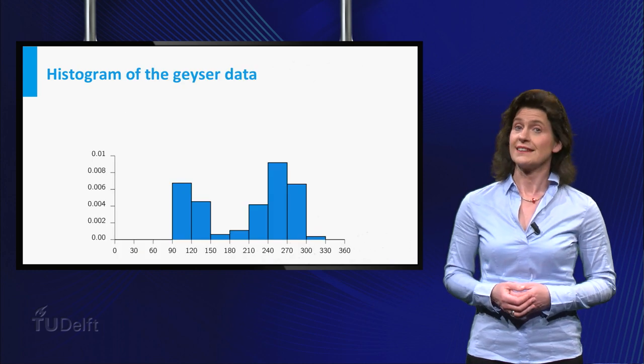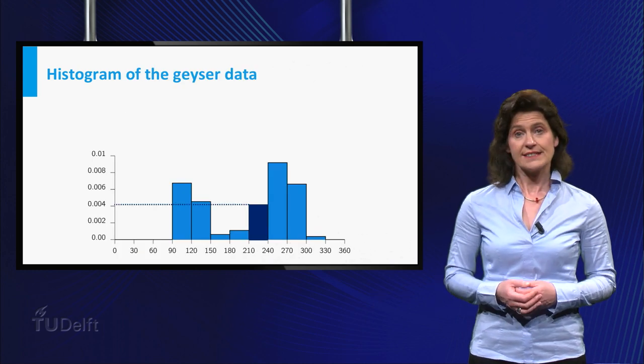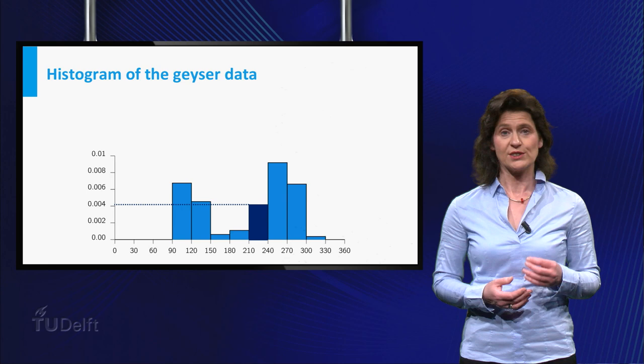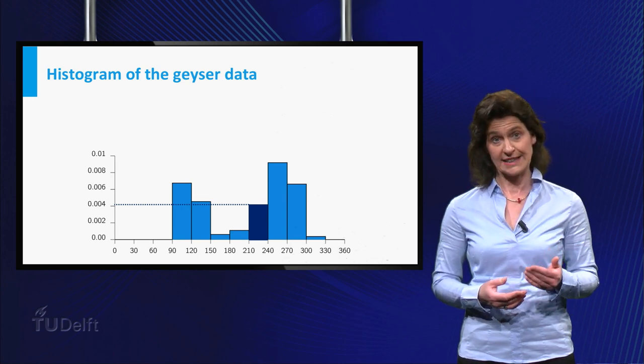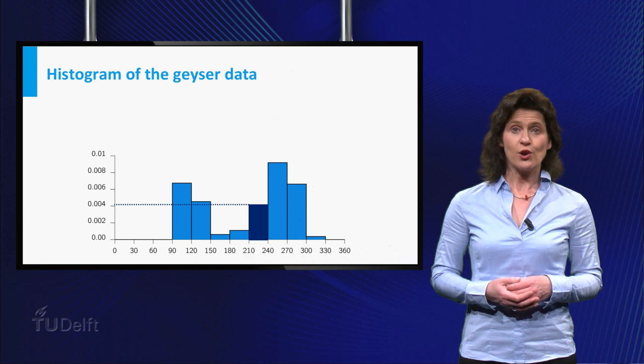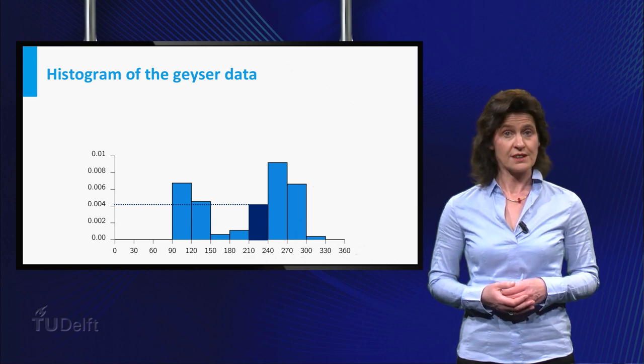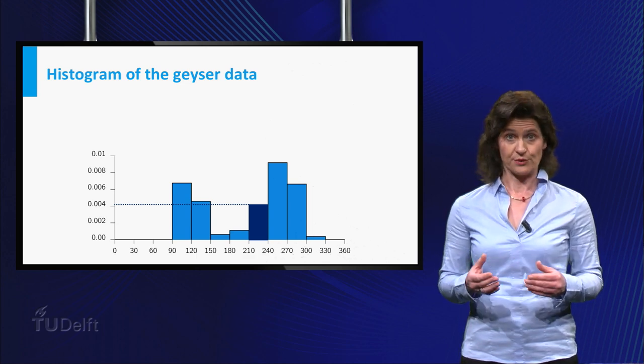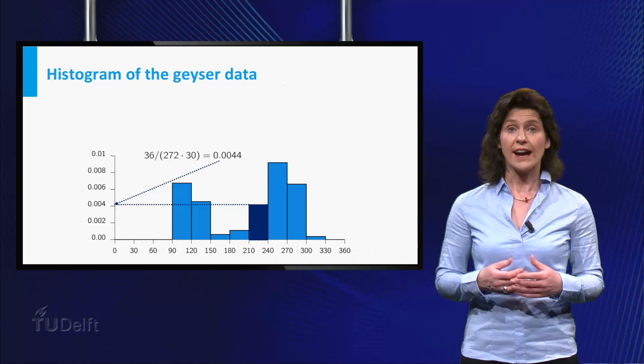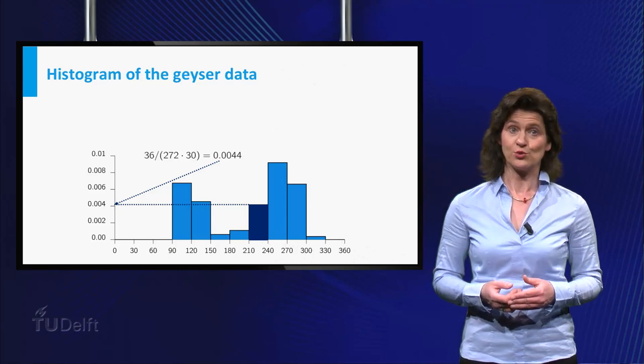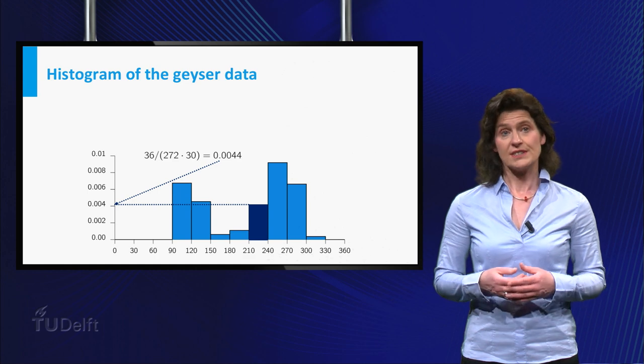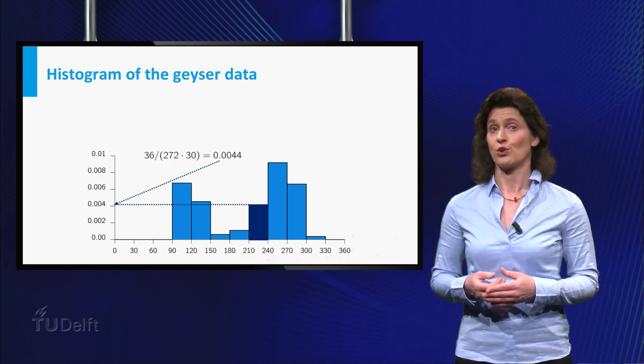Here is the histogram of the geyser data again. As an example, let's compute the height of the histogram above the bin running from 210 to 240 seconds. Of the 272 observations, 36 belong to this interval. So the height should be 36 divided by 272 times 30, which equals 0.0044.